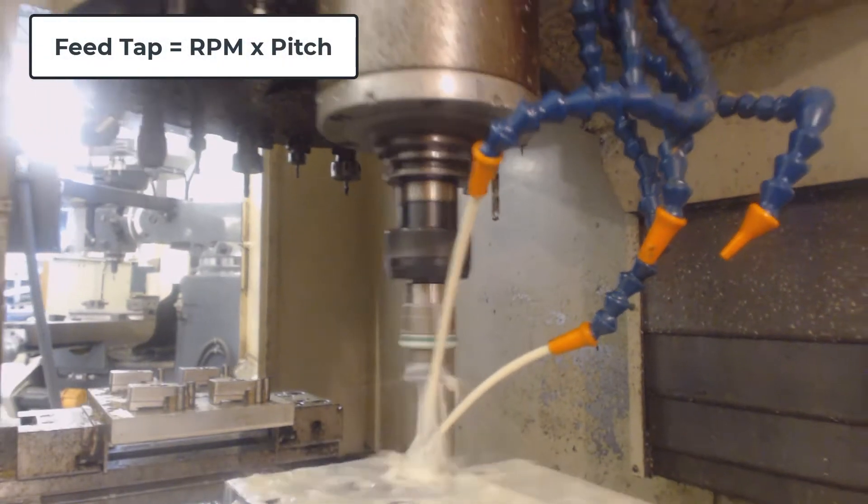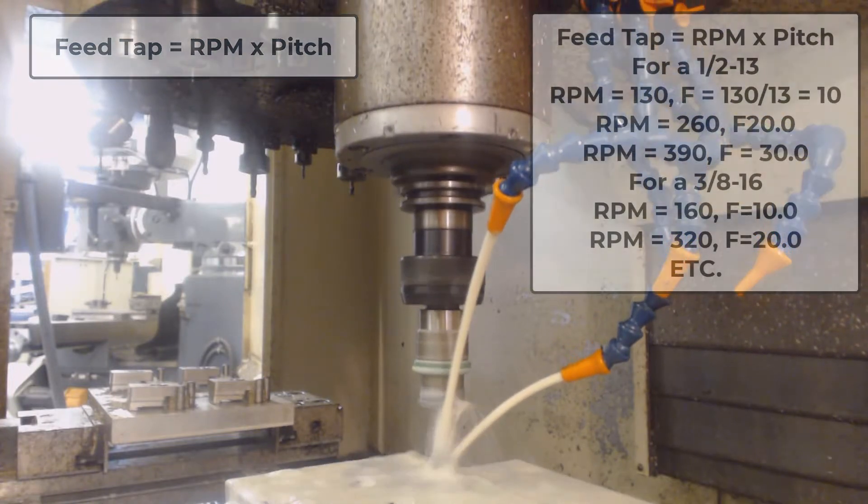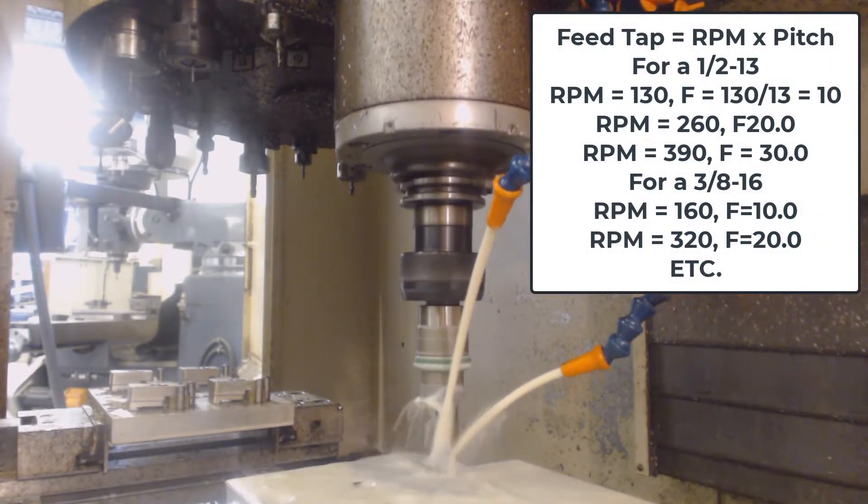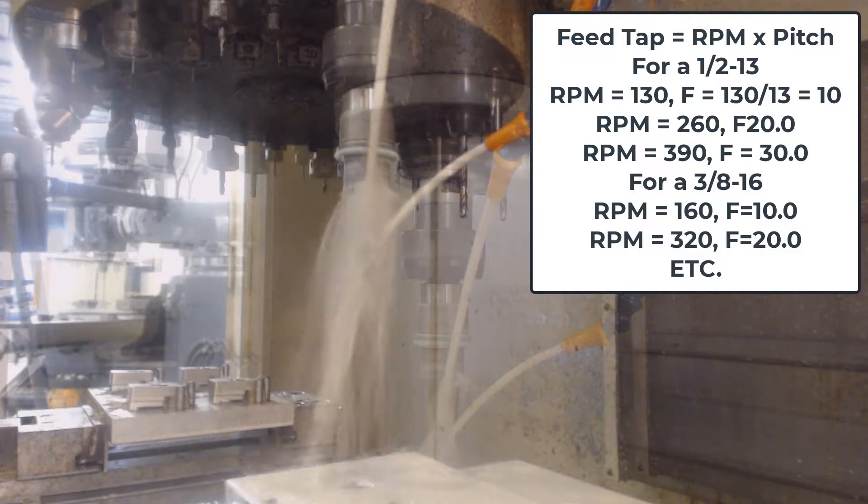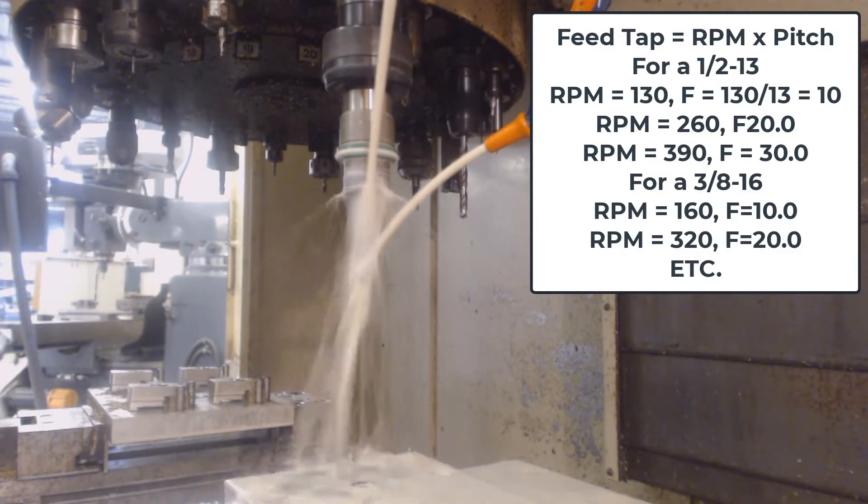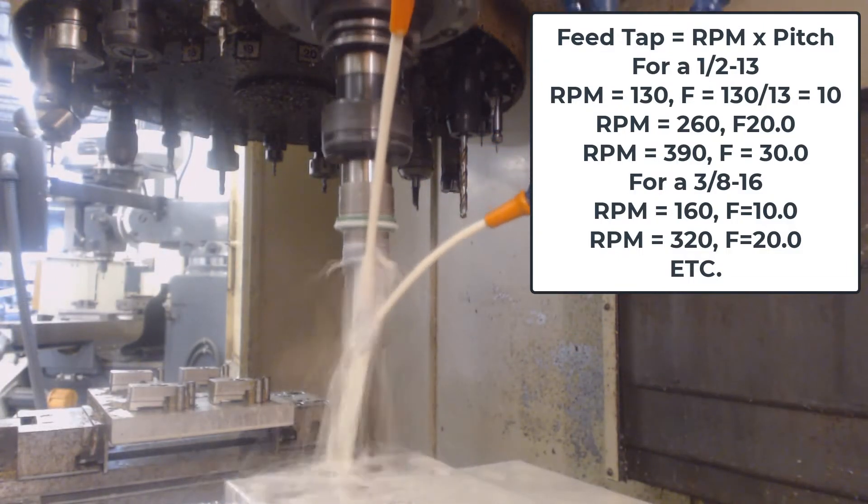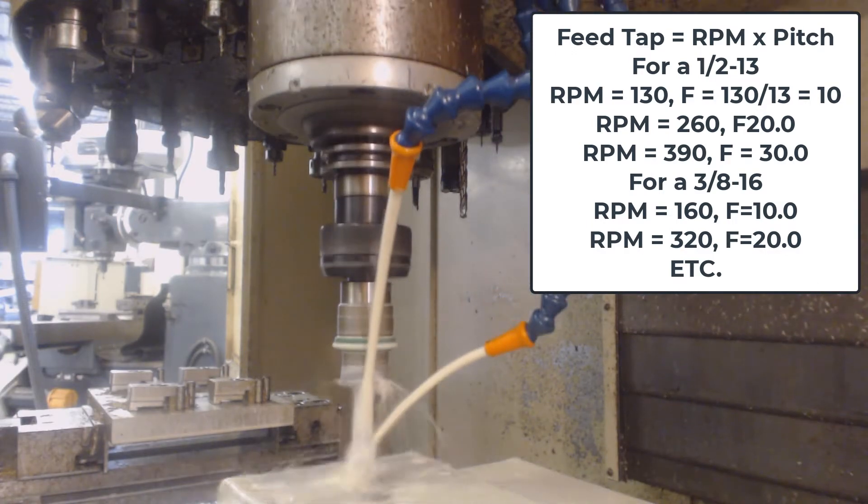The feed rate for a tap must be the RPM times the pitch. To make the calculation easy for inch threads, add a zero to the number of threads per inch. This will be the RPM, and then the feed will always be 10 inches per minute. Typically this is a bit slow, but it's easy to double or triple.